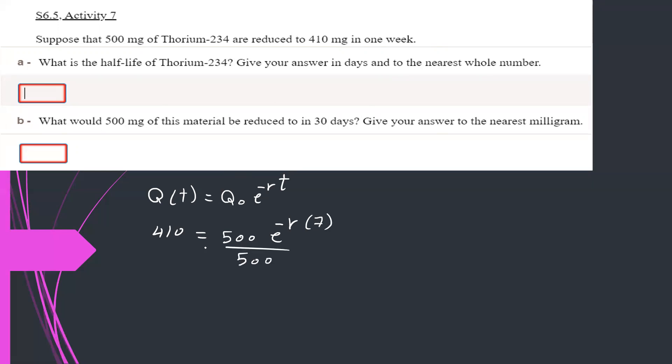By solving this equation, by dividing by 500 each side, so e to the negative 7r is equal to 0.82. This amount, 410 divided by 500. By taking ln of each side, so negative 7r simply is ln 0.82. So r is ln 0.82 divided by negative 7, and you can use this formula to find r, the constant of decay. The r now is 0.02835.